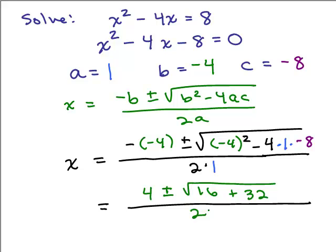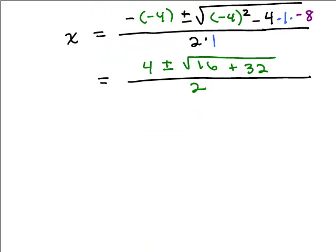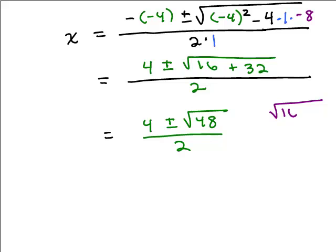So we have 4 plus or minus the square root of 48 all over 2. Now we need to simplify the square root of 48. Remember that 48 is 16 times 3, so the square root of 48 is the square root of 16 times the square root of 3, which is 4 square roots of 3. So we write this as 4 plus or minus 4 square roots of 3, all over 2.